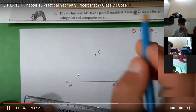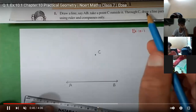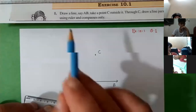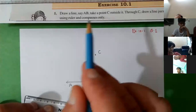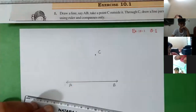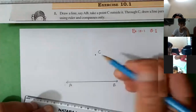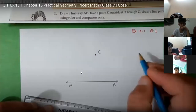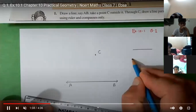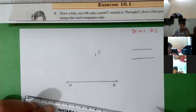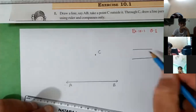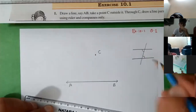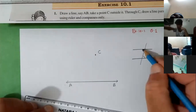Now, through C we have to draw a line parallel to AB — a line parallel to AB — using ruler and compass only. First of all, understand what is parallel: when two lines are drawn one below the other, that is called a parallel line. A transversal line passes through them, and remember the lines are only parallel when two alternate interior angles are equal.